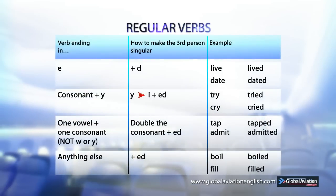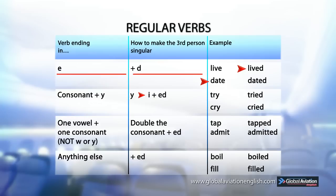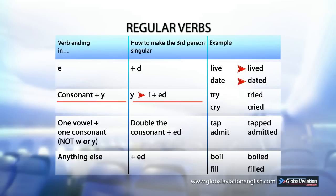Regular verbs spelling rules. Verb ending in E: to make the simple past, add D. For example, live → lived, date → dated. When you have a verb ending in a consonant and the letter Y, to make the simple past, change the Y to an I and add ED. For example, try → tried, cry → cried.